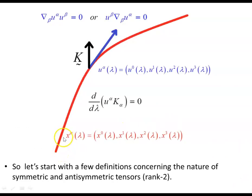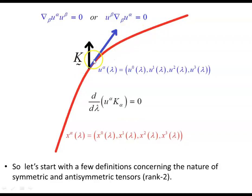Here's our world line — for a free particle this is a geodesic, meaning no forces acting, just free to follow the curvature of space-time. The path, parameterized by lambda, gives the four-velocity as tangent to this world line. The geodesic equation states this object equals zero, meaning geodesics parallel transport their own tangent vectors — their magnitude and direction remain constant along the curve.